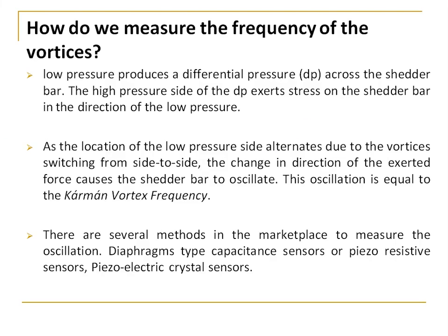How do we measure the frequency of the vortices? Whenever fluid flows around the bluff body, low pressure and high pressure regions develop around it, creating a differential pressure across the bluff body. The higher pressure side exerts stress on the shedding bar in the direction of the low pressure. As the location of the low pressure side alternates — switching from one side to the other — the direction of the force on the shedding bar reverses, causing the shedding bar to oscillate at the vortex frequency.